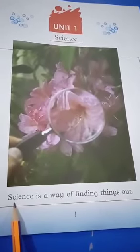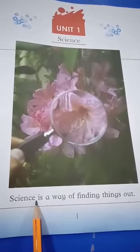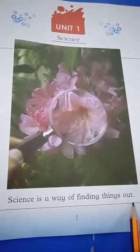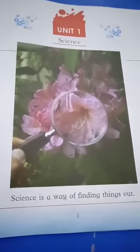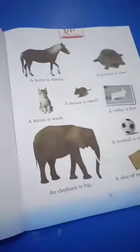Students, here we have the very basic definition of science. What is science? Science is a way of finding things out. We find out things in different ways.